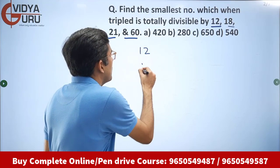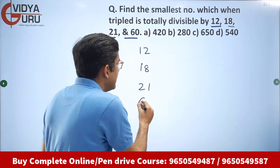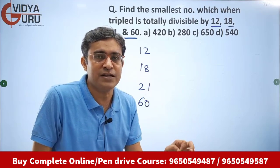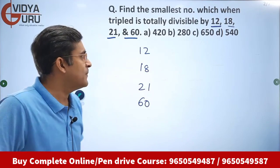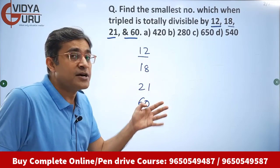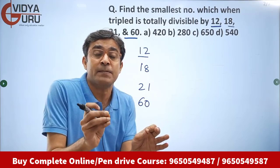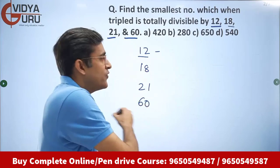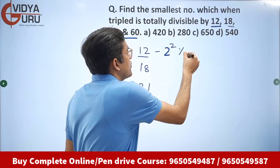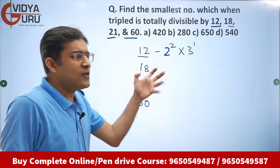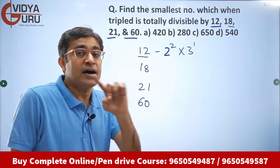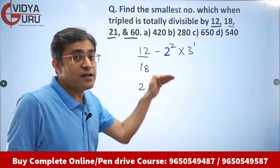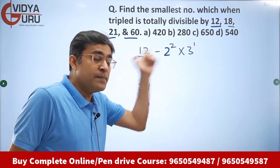I'm going to teach you how to smartly calculate the LCM of these numbers. You have to express all these numbers as a product of prime numbers — the prime factorization method. So 12 can be written as 2 squared into 3 to the power 1. I've used 2 and 3 because 2 and 3 are prime numbers. I have to write 12 as a multiple of prime numbers.